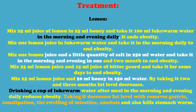Mix one lemon's juice and a little quantity of salt in 250 milliliters of water and take it in the morning and evening for one to two months to end obesity. Mix 25 milliliters of lemon juice and 15 milliliters of bitter gourd juice and take it for some days to end obesity. Mix 25 milliliters of lemon juice and 20 milliliters of honey in 250 milliliters of water; taking it for two to three months decreases fat level.